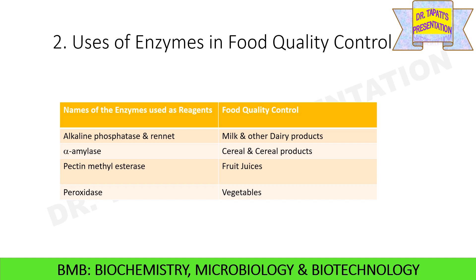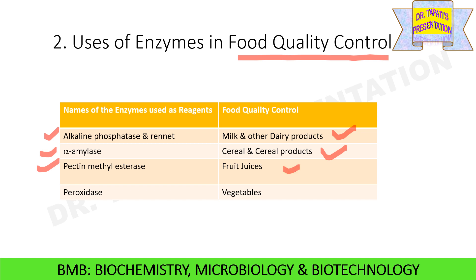Here are a few other enzymes used in food quality control. Alkaline phosphatase and related enzyme activities are measured for the quality control of milk and other dairy products. Alpha-amylase activity is measured in order to check cereal and cereal products quality. Pectin methyl esterase enzyme activity is checked for the quality control of fruit and vegetables.